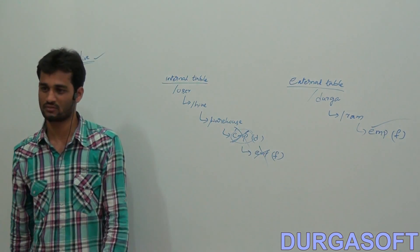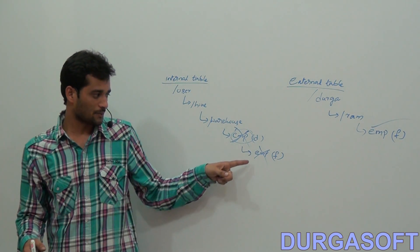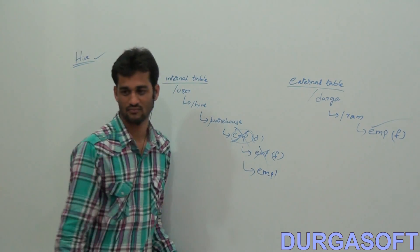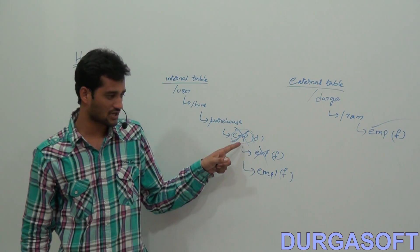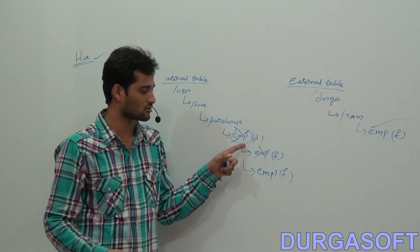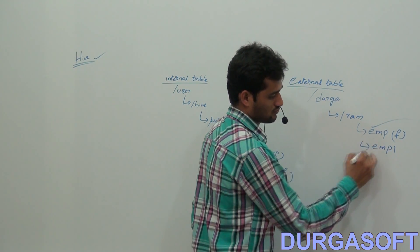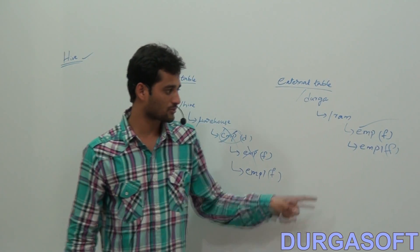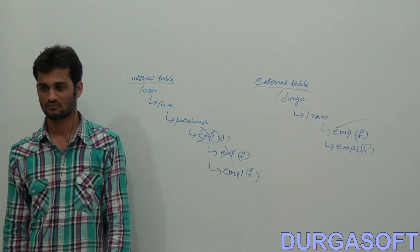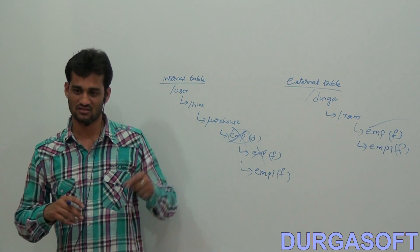So for internal tables, data loss will occur when you drop the table. For external tables, data loss will not happen. Another important point: if I keep another file emp1 in the same emp directory of the internal table, then select * from emp will display both files' data. Similarly, for the external table empl, if I load another file emp1, select * from empl will show both files' data — because it refers to the entire ram directory location.